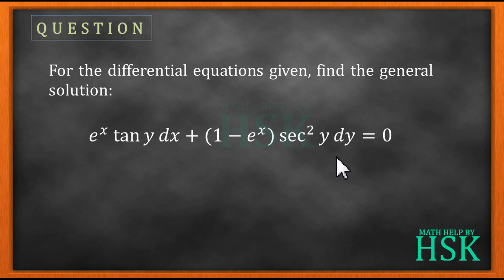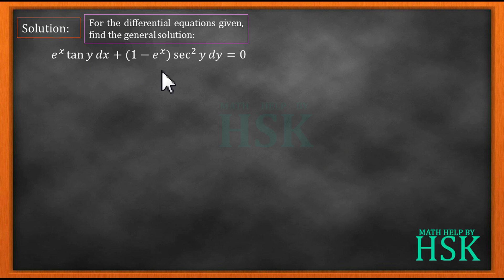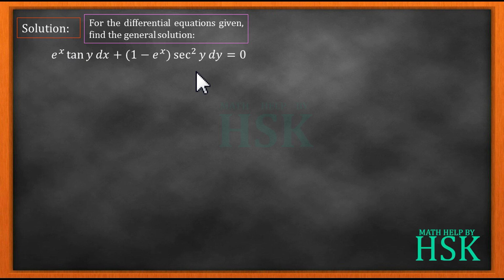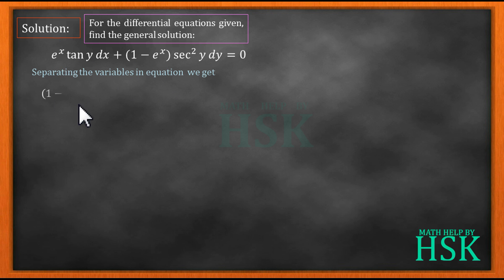For this equation we have to find a general solution. On observing this differential equation, we see that the variables can be separated — that is, the terms of x can be written on one side and the terms of y can be written on the other side. So let's start separating the variables.